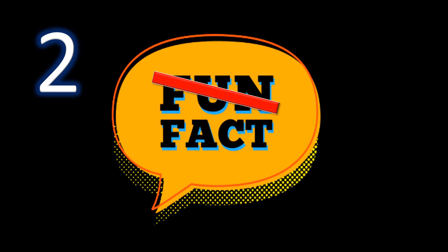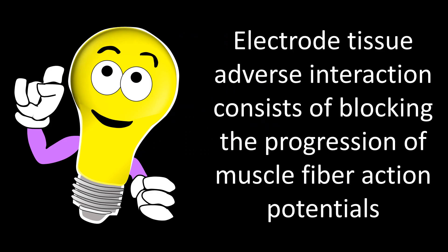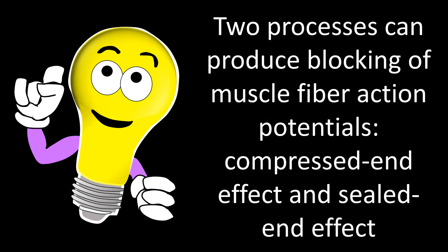We will follow the golden rule with two general facts. Fact number one: electrode-tissue adverse interaction consists of blocking the progression of muscle fiber action potentials. And the second: the two processes that can produce blocking of muscle fiber action potentials are named compressed-N effect and sealed-N effect.